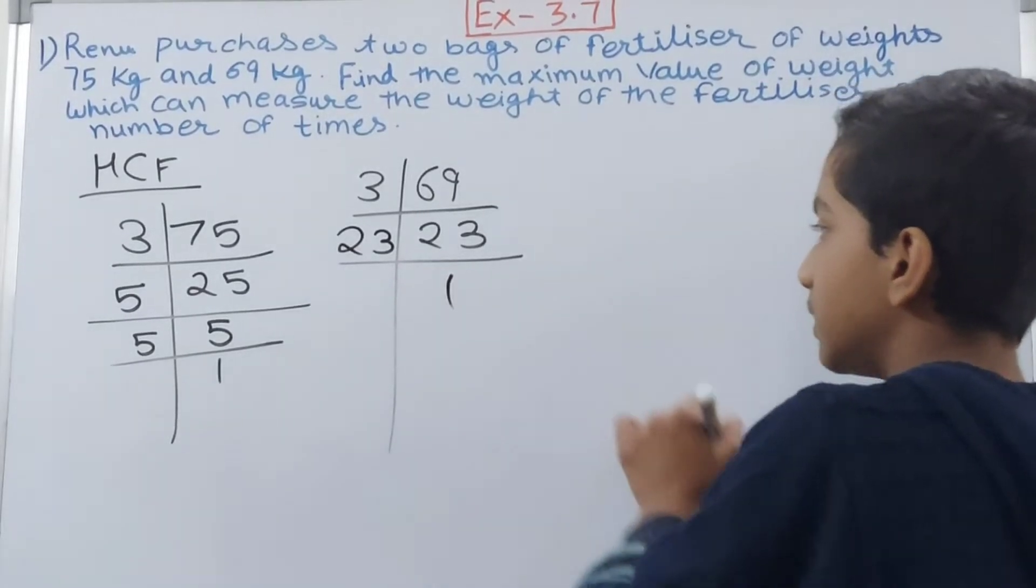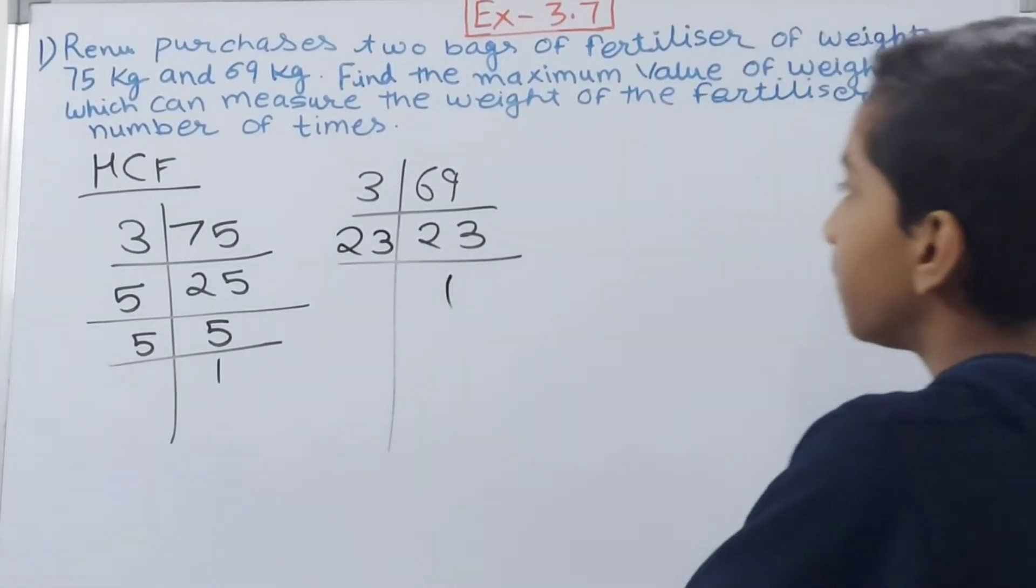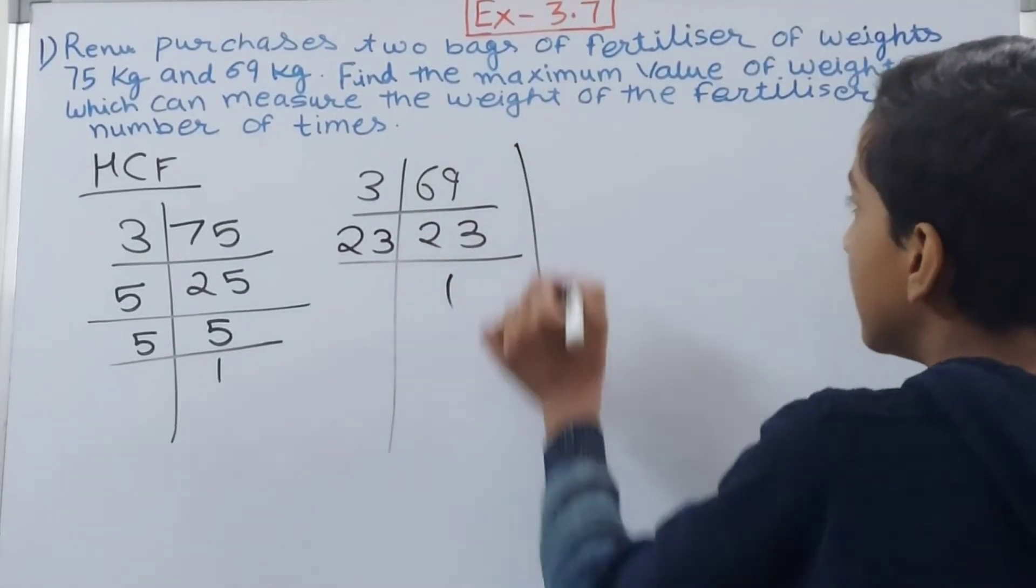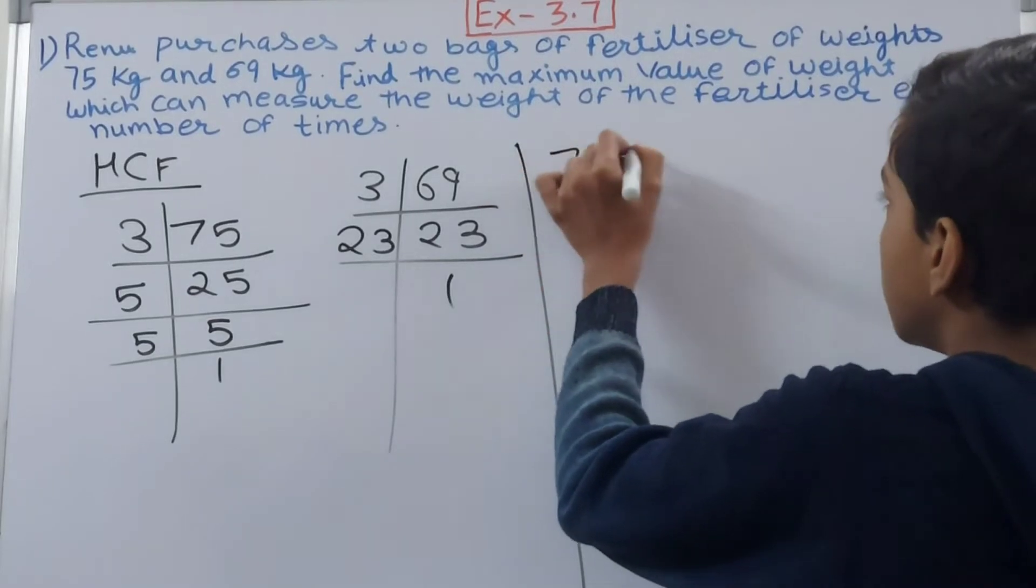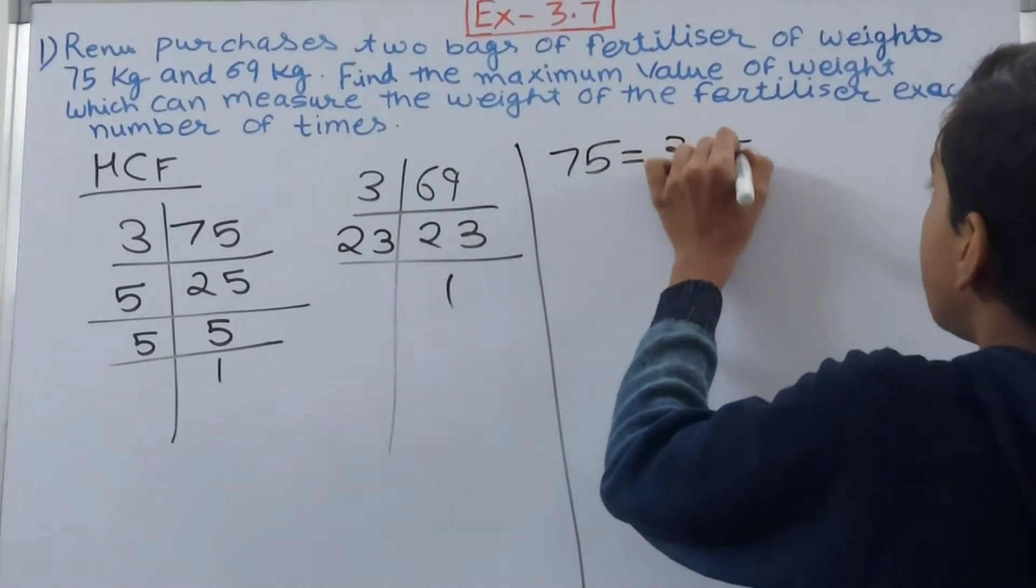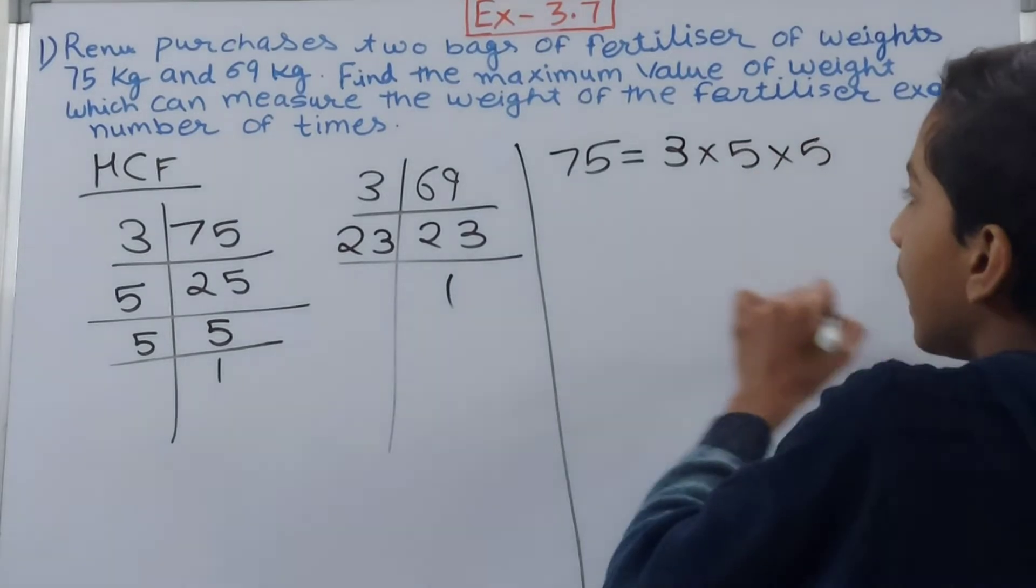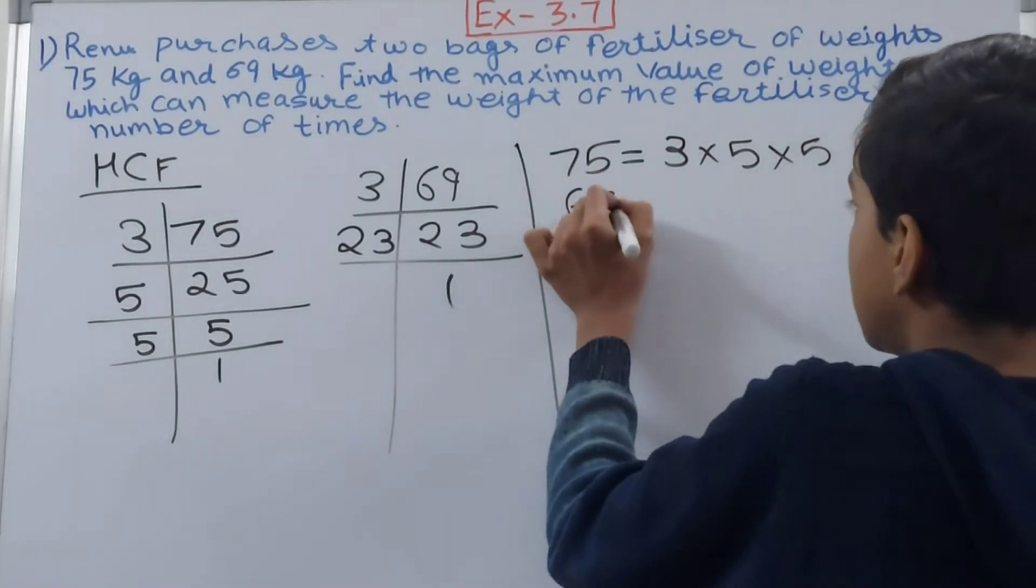So now if you see, 75 is equal to 3 × 5 × 5, and 69 is equal to 3 × 23.